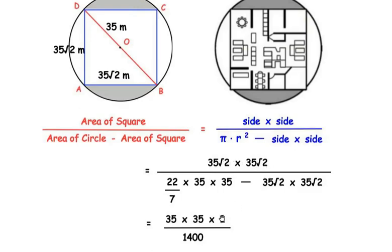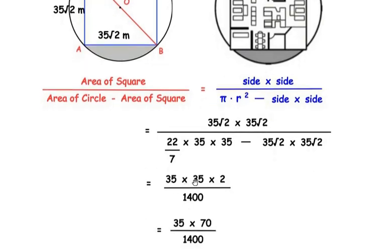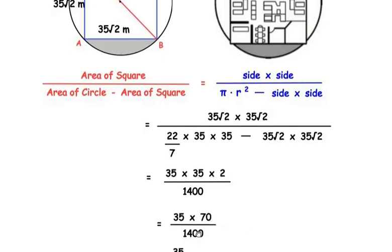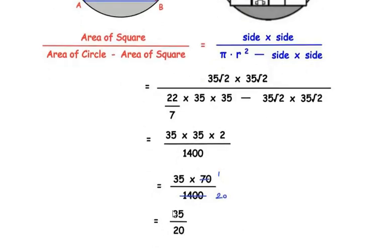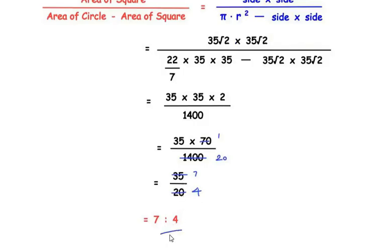The numerator simplifies to 35² × 2 = 35 × 70, and the denominator (from previous working) simplifies to 1400. So the ratio is 70/1400. Simplifying: 70 divides 1400 twenty times, giving 35/20. Both 35 and 20 are divisible by 5, giving 7/4. Therefore the ratio of the area of land on which the house is built to the remaining area is 7:4.